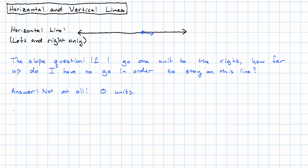When I have a horizontal line, the slope is zero. How far do I have to go up to stay on this line? I don't have to go up or down at all. This line only goes left and right.